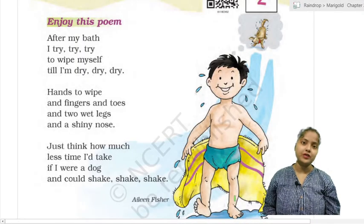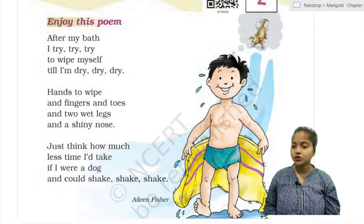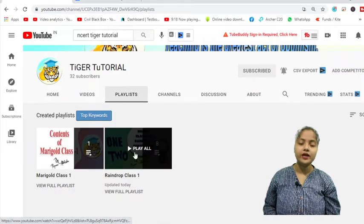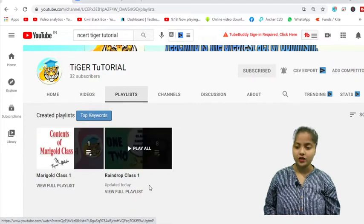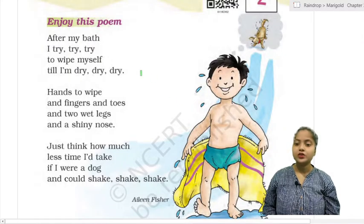Hello students, welcome to Tiger Tutorial. In this video I'm going to start Unit 2 of Marigold book: After a Bath. You can also check out my playlist of Tiger Tutorial where I have uploaded videos of Raindrop Class 1 and Marigold Class 1. So let's start the video. It's a poem about a bath.